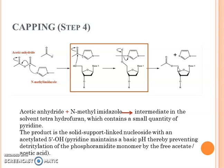Capping is the last step of the cycle, in which we cap the unreacted nucleotide. This is carried out in the presence of acetic anhydride and N-methylimidazole. These two form an intermediate and undergo structural changes, and at the end the acetylated part stays with the 5'-hydroxyl end. This process is known as capping.